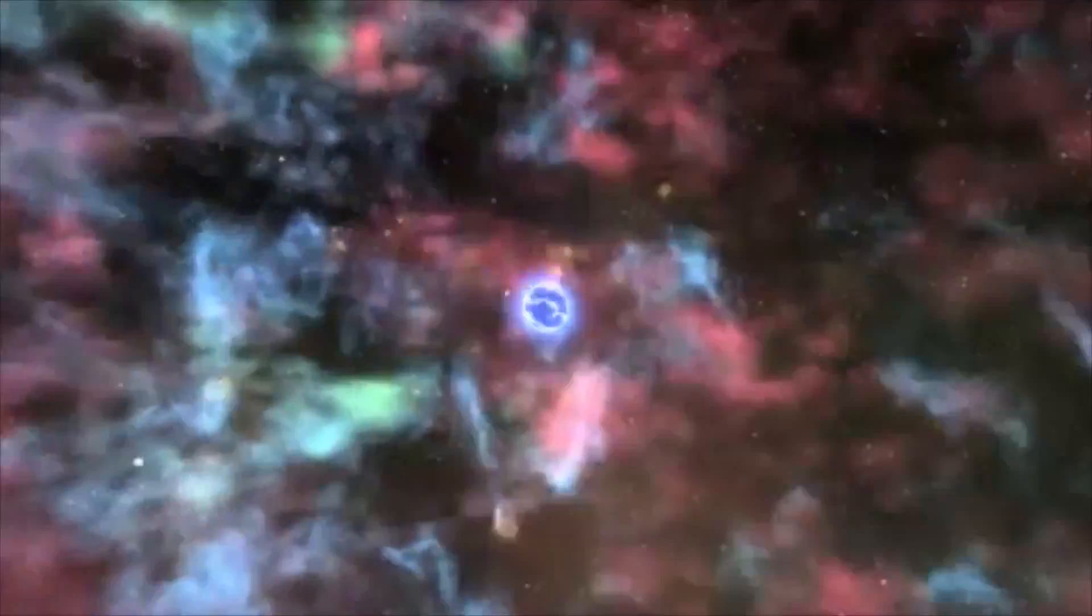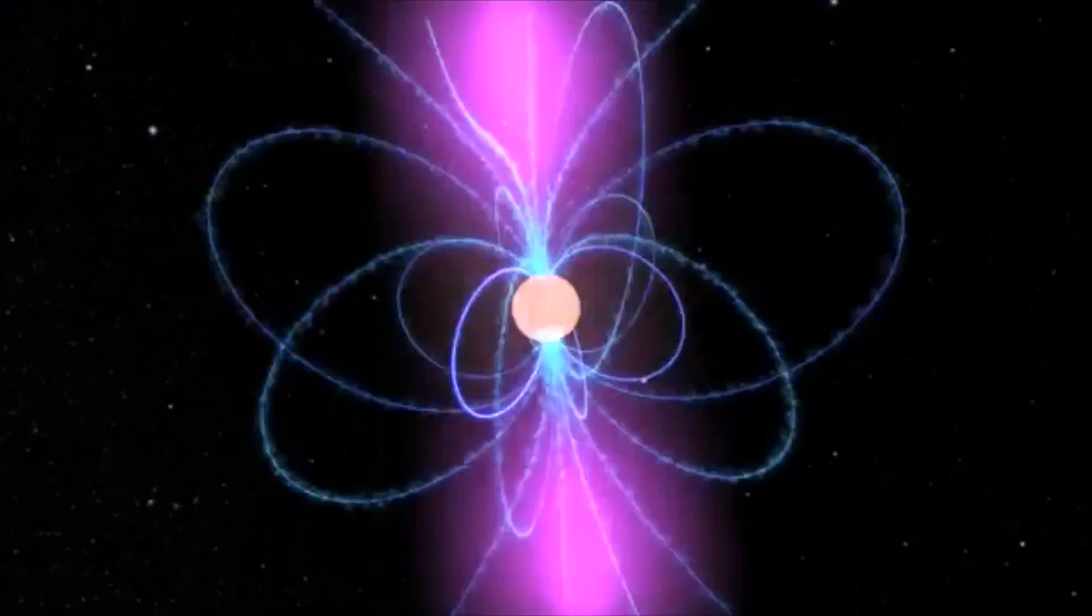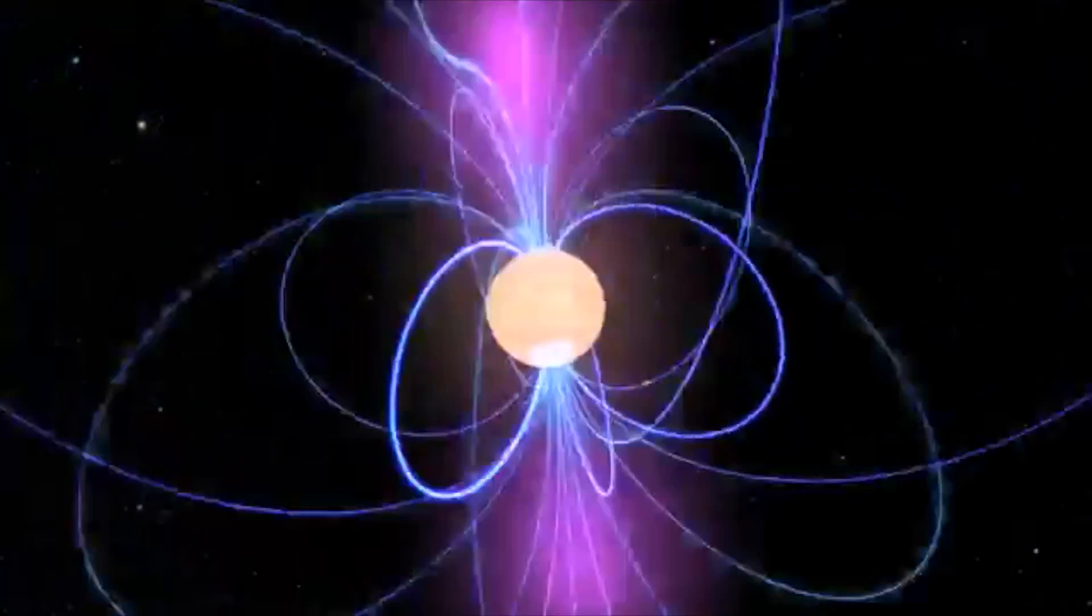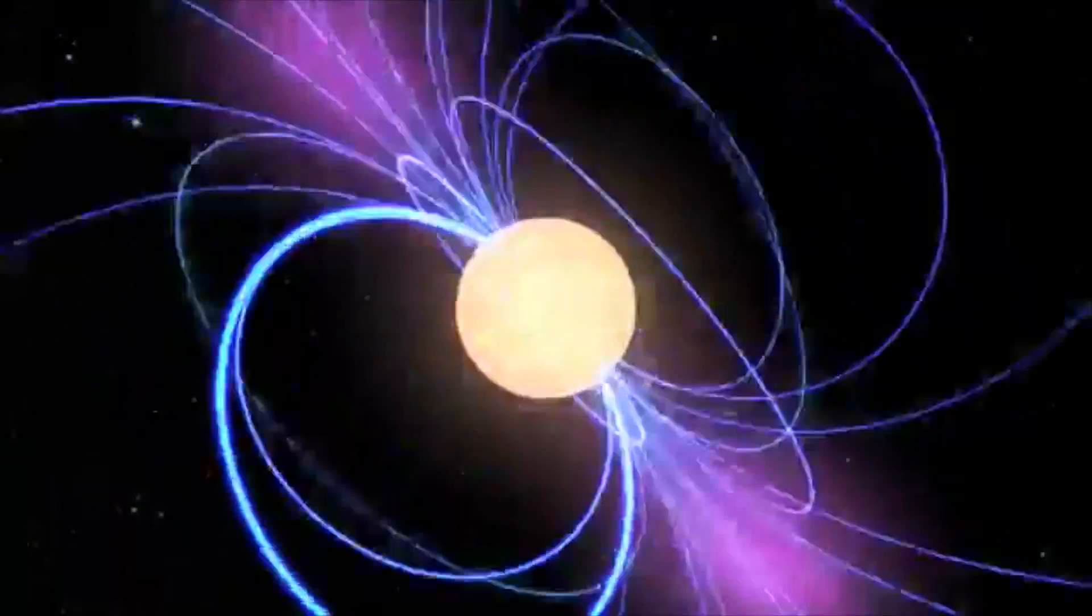The star's outer layers are blasted away in that explosion, but material left at the center of the star collapses in on itself. This forms a tightly packed ball of material, becoming a neutron star.